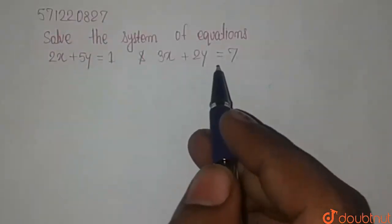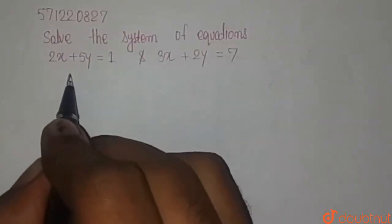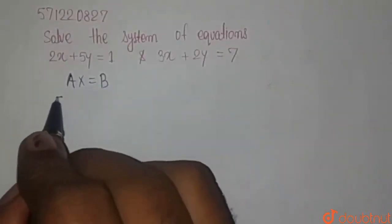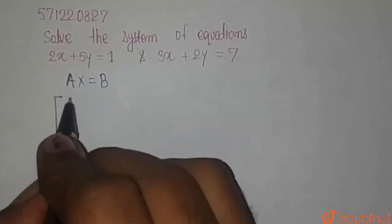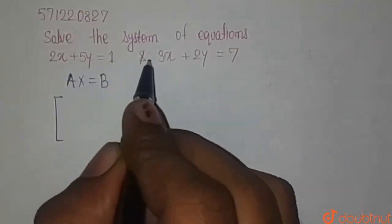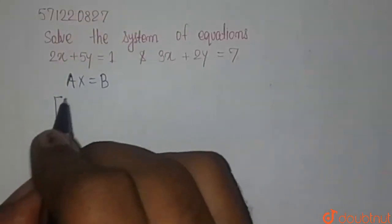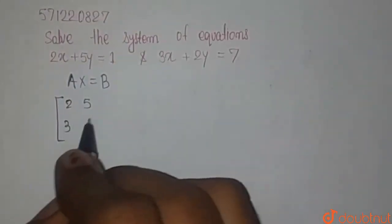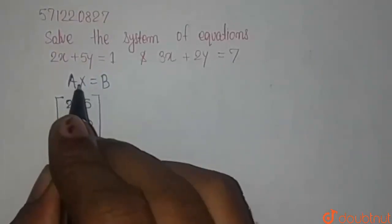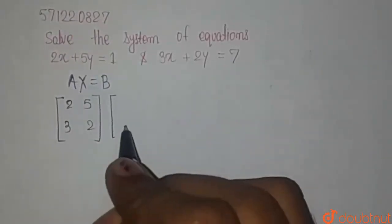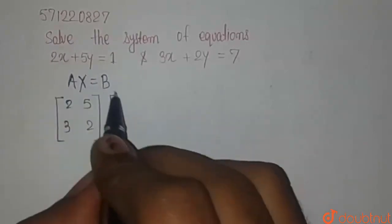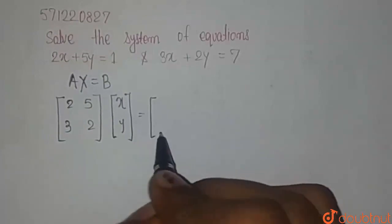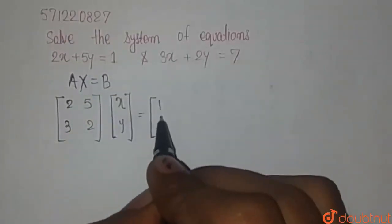We know that these two given equations can be written in the form AX equals B. Here, A is the coefficient matrix of x and y, which will be formed as the matrix with entries 2, 5 in the first row and 3, 2 in the second row. Capital X is the column matrix given as x, y.